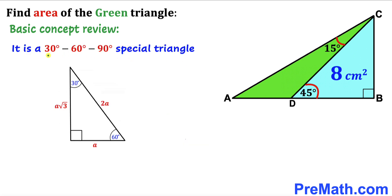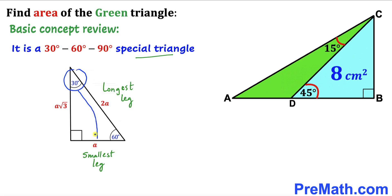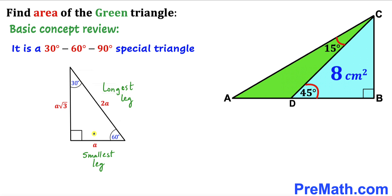Now let's recall the 30-60-90 degrees special triangle. The 30 degree angle is our smallest angle, so the side opposite to that angle is our smallest leg, whereas the 90 degree angle is our largest angle, so the side opposite to that is our longest leg. In a 30-60-90 triangle the longest leg is always twice the smallest leg, and in general if the smallest leg is A units then the longest leg is 2A units and the third leg is A times square root of 3.